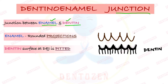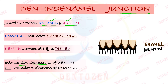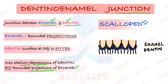Enamel, on the other hand, has rounded projections — something coming out. So what happens is that these rounded projections of enamel fit into the shallow depressions of dentine. Because of this, a particular appearance is produced. The term used for this appearance is very important — this appearance is called scalloped, so the dentino-enamel junction is scalloped.